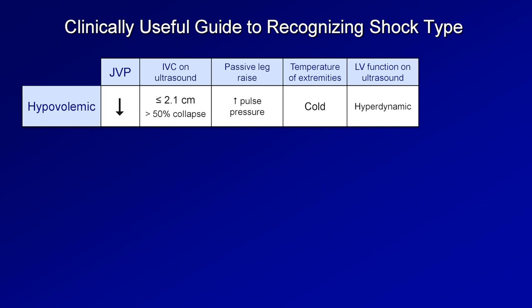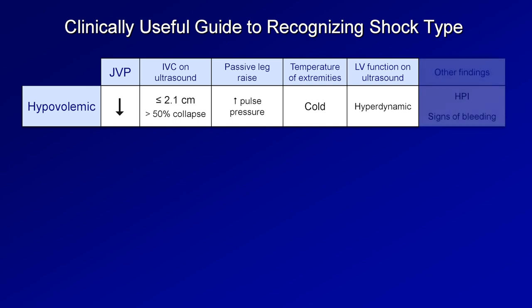Other findings in hypovolemic shock: more so than other shock types, the history of present illness almost always suggests it. The three most common causes of hypovolemic shock are trauma, GI hemorrhage, and massive diarrhea — none of which are usually unknown at the moment of presentation.